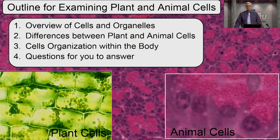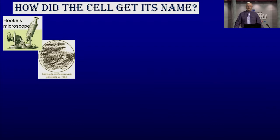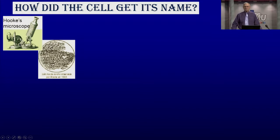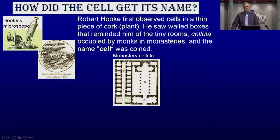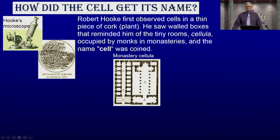There are some questions for you along the way. The first question: how did the cell get its name? Here we see Hook's primitive microscope — since cells are very small and microscopic, you have to have a microscope to see them. When Hook first observed plant cells, he looked at a little piece of cork, cut it very thin, and it reminded him of monk cellula — rooms that monks used to live in. From cellula, he coined the word cell.